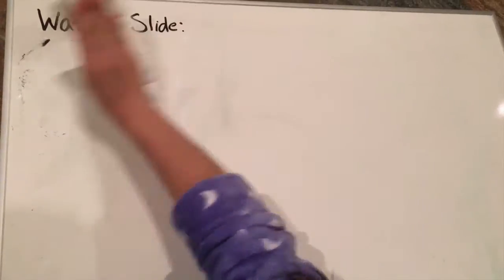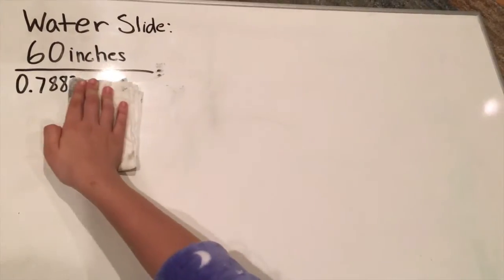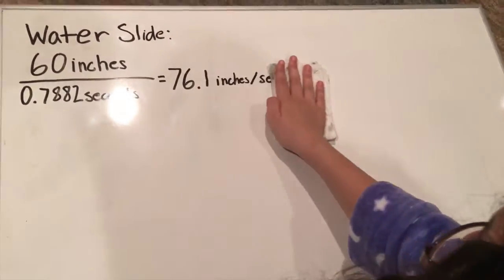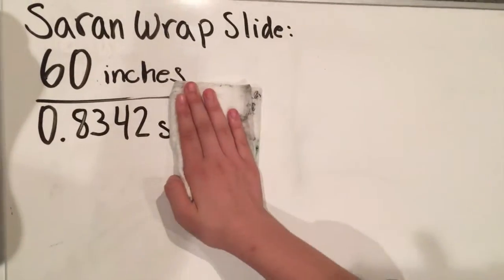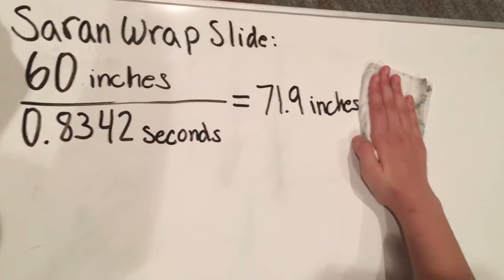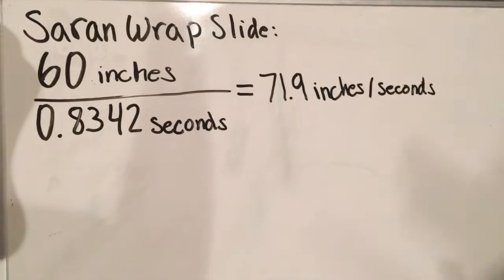For the water slide, it would be 60 divided by 0.7882, which is equal to 78.1 inches per second. And for the saran wrap slide, it would be 60 divided by 0.8342, which is equal to 71.9 inches per second.